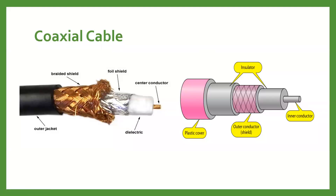Hello everyone. Today we are going to see coaxial cable, which comes under the guided media. We already know that transmission media consists of two types: guided media, also called wired media, and unguided media, which is called wireless media. In guided media, there are three types of cables: twisted pair cable, coaxial cable, and fiber optic cable. In the last session we discussed twisted pair cable; today we are going to see coaxial cable.